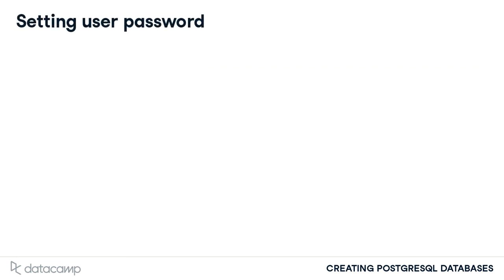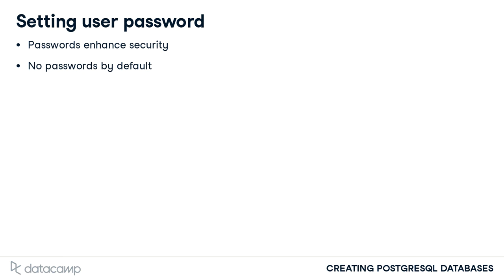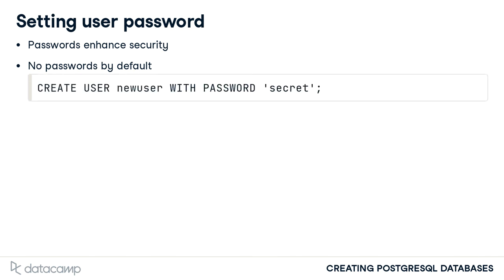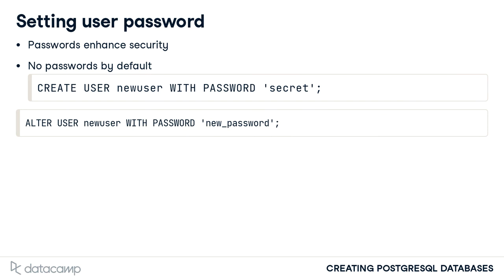Let's return to the personal finance database example discussed previously. It is possible that your computer, and therefore the database, could fall into the wrong hands. User accounts can be secured using passwords. New user accounts do not have passwords added to the account without this action being taken explicitly. The CREATE USER command can be modified to also set a password for the newly created user, by adding the phrase WITH PASSWORD followed by the password's characters enclosed in single quotation marks. In this example, new_user would be assigned the password 'secret'. The user can change the password later using the ALTER USER command, followed by the same WITH PASSWORD syntax. After executing this ALTER USER command, new_user's password would become 'new_password'.